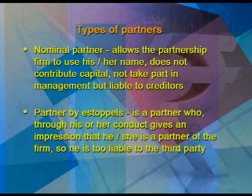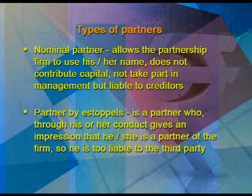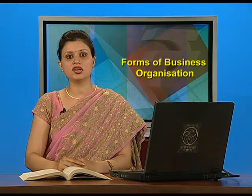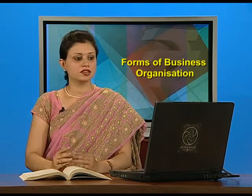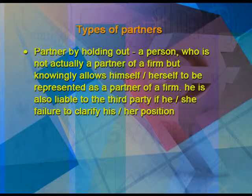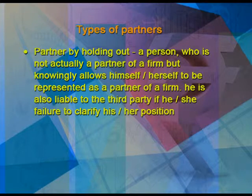The fifth type is a partner by estoppel — a person who, through their conduct, gives the impression that they are a partner of the firm, and is therefore liable to the third party. The sixth type is a partner by holding out — a person who is not actually a partner but knowingly allows themselves to be represented as one, and is also liable to the third party.